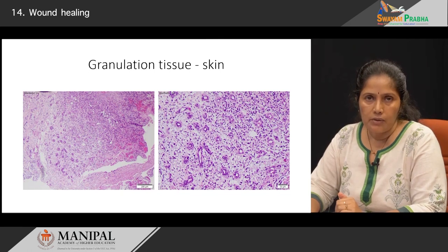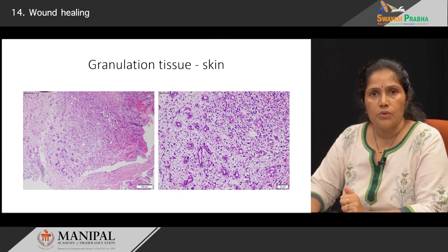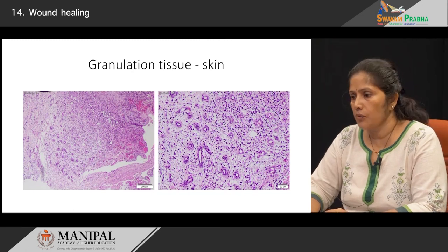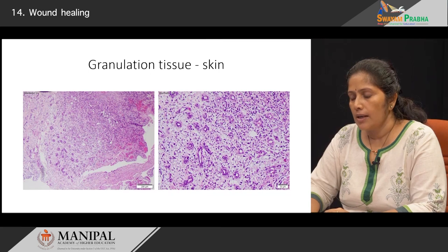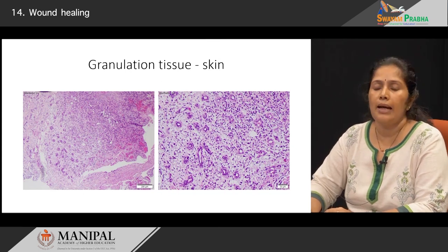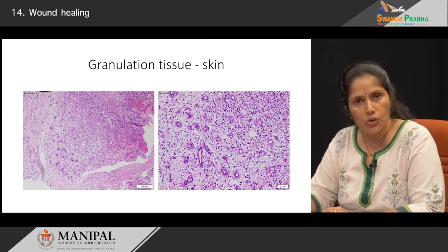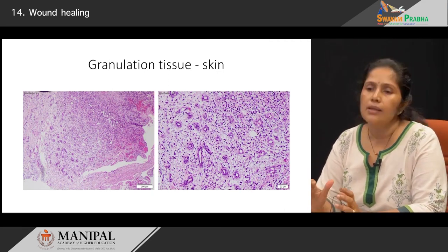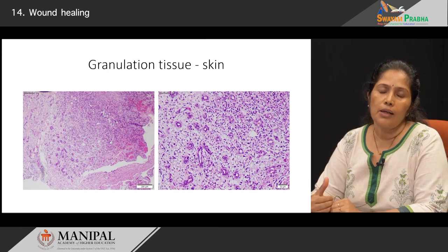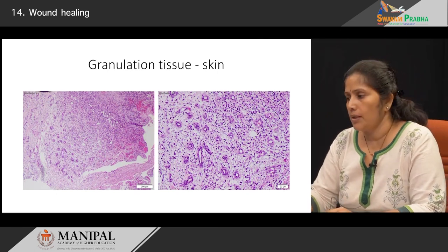If you were to take a biopsy from a patient's ulcer, this is exactly what it is supposed to show: a superficial ulcerated area which could have some necrotic material, below which you see extensive inflammation, and then below it you see the active granulation tissue. As it becomes more and more mature, you will see fewer blood vessels and more of the extracellular matrix laid down by the fibroblasts.